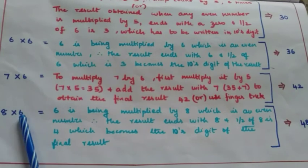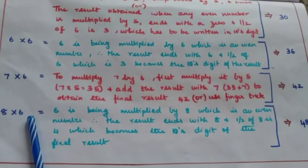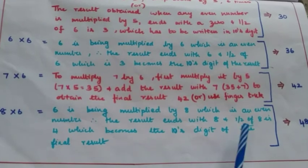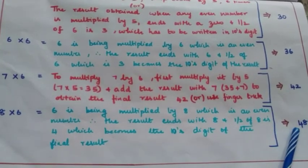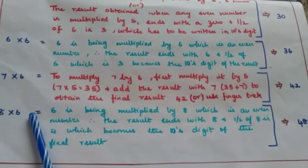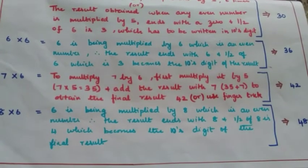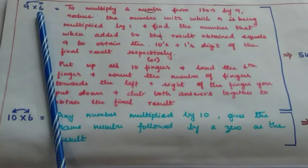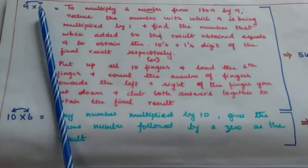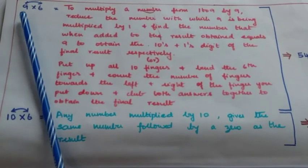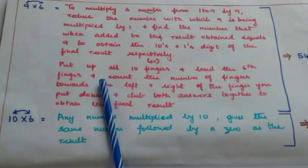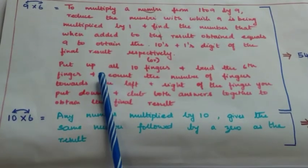For row 8, since 8 is an even number being multiplied by 6, the result ends with 8 and half of 8 is 4, which becomes the tens digit. Therefore 8 sixes are 48. For row 9, since 9 into 6 is the same as 6 into 9 and we have already learnt table 9, we can use the tricks from table 9 to find the result.